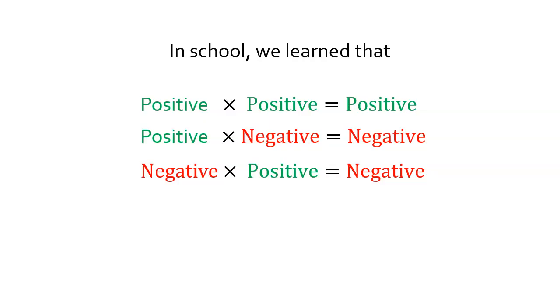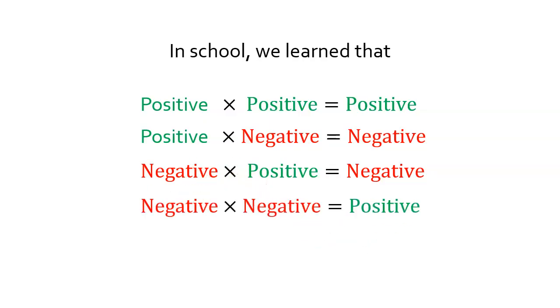Negative times negative equals positive. Hmm. It is the rule, but I want to be mathematically convinced that this is true. How?